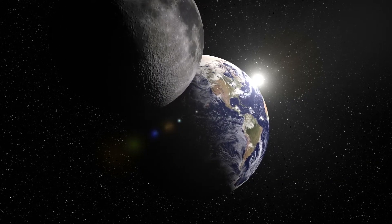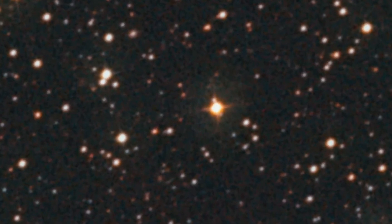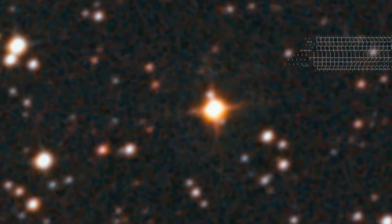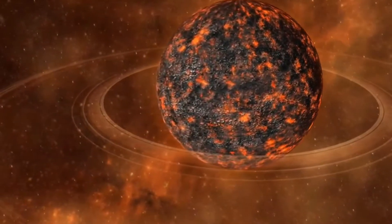The story is very different for PDS 70, a star 370 light years away in the constellation Centaurus. This star is very young, so young in fact that it isn't even a proper star yet.